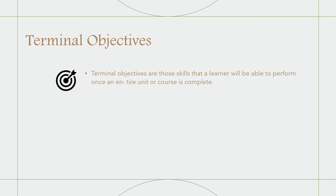The task is what the student is doing. The condition is what the environment will be like where they're doing the task. And the standard is the level at which the task should be done.